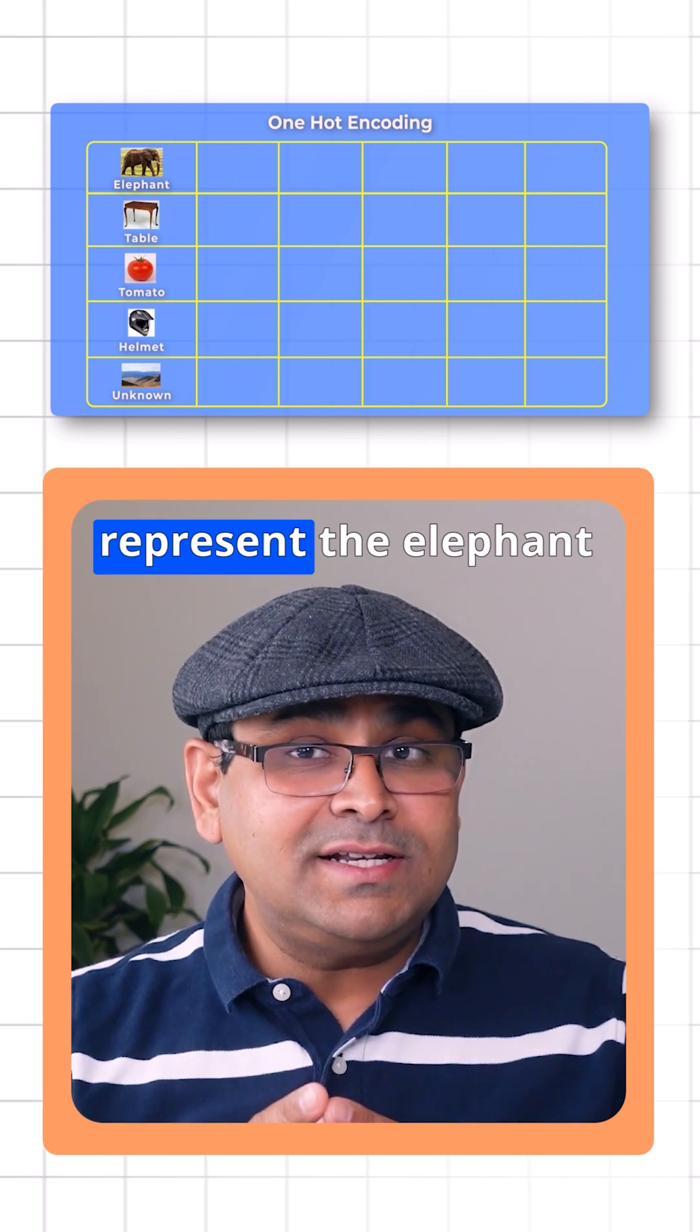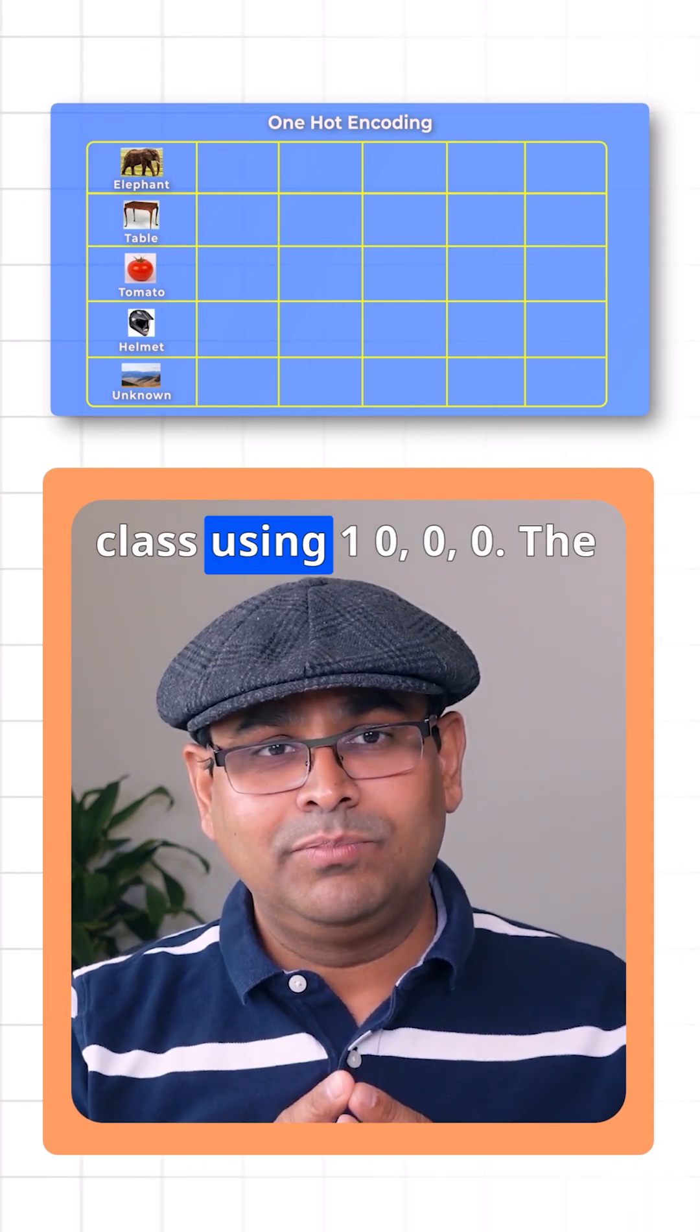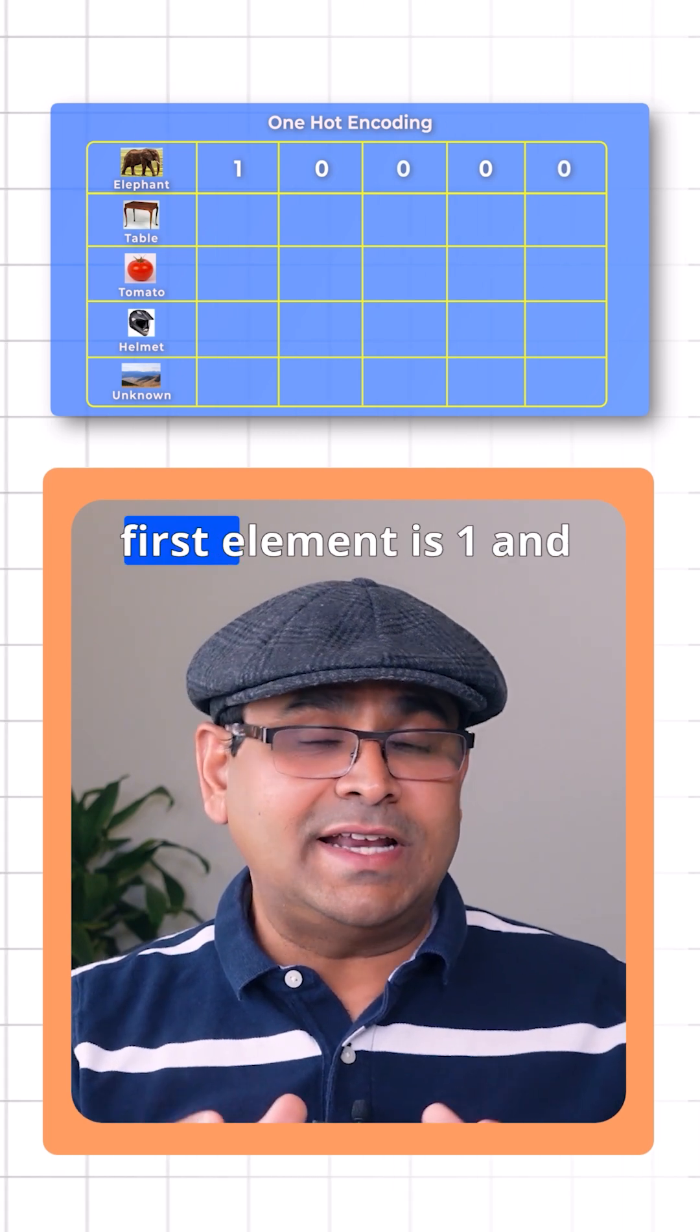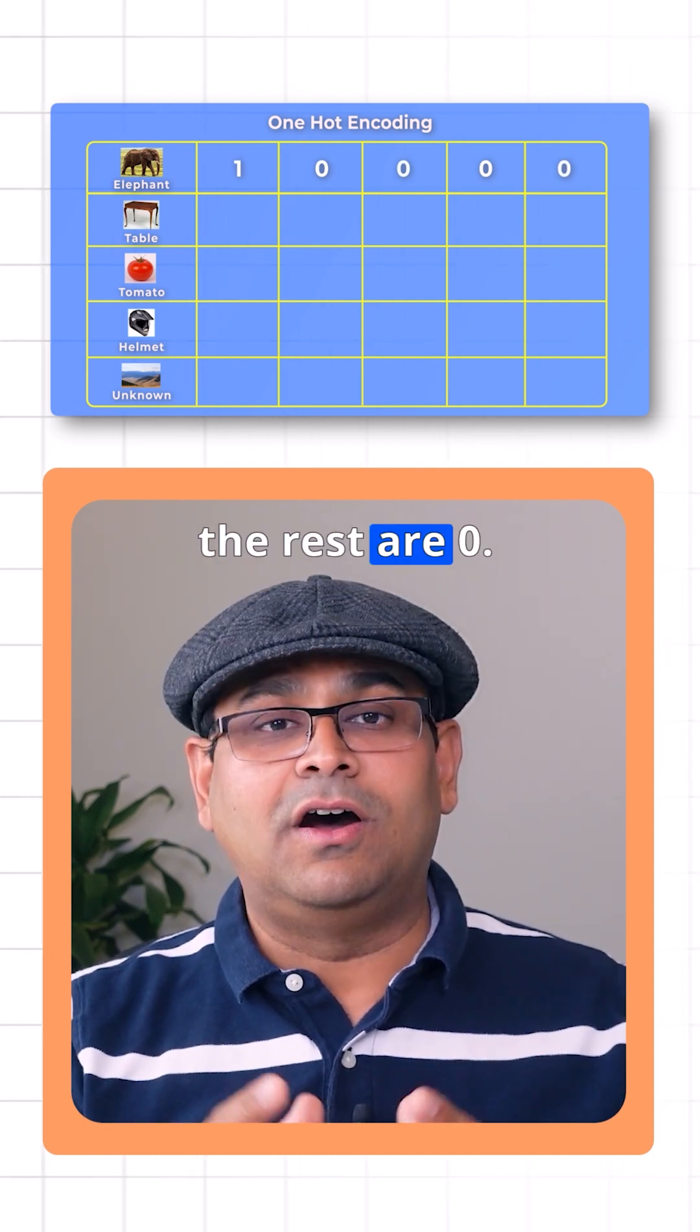For example, we represent the elephant class using one, zero, zero, zero, zero. The first element is one and the rest are zero.